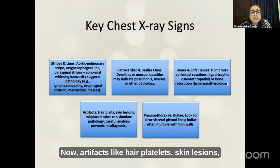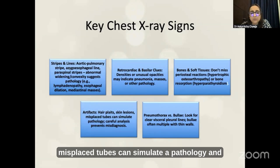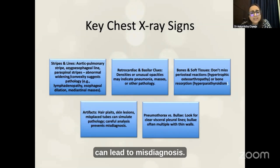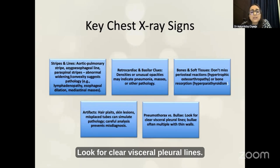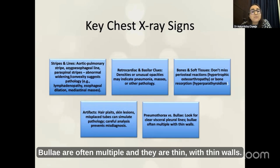Artifacts like hair braids, skin lesions, or misplaced tubes can simulate pathology and can lead to misdiagnosis. For pneumothorax versus bullae — look for clear visceral pleural lines. Bullae are often multiple and have thin walls.